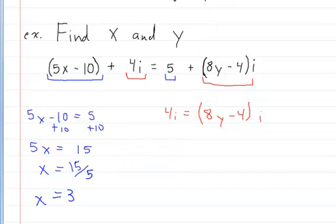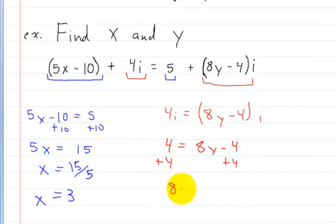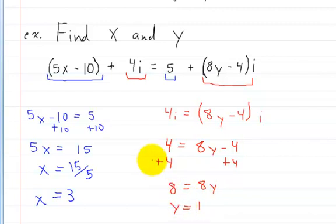For the imaginary part, you don't need to keep the i's while solving. You write 4 equals 8y minus 4. Add 4 to both sides to get 8 equals 8y, so y equals 1. That's how you solve for x and y in this problem.